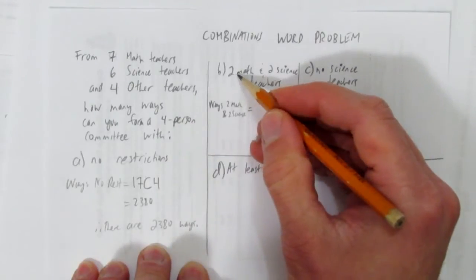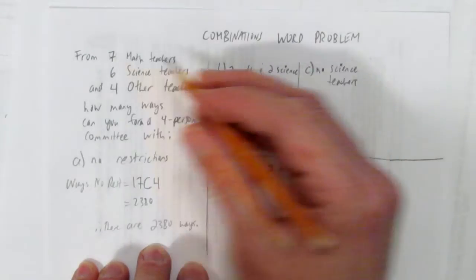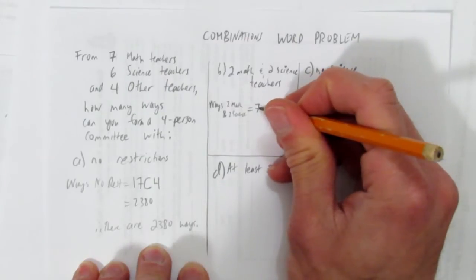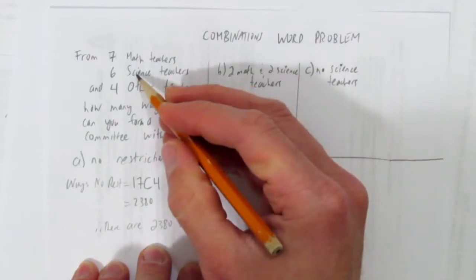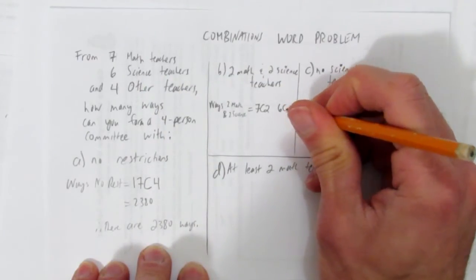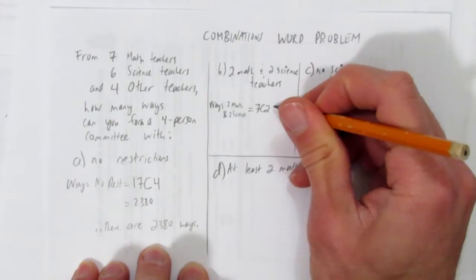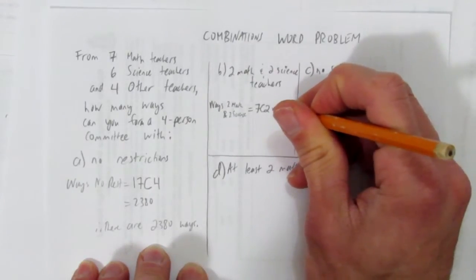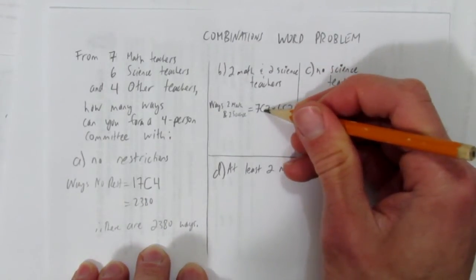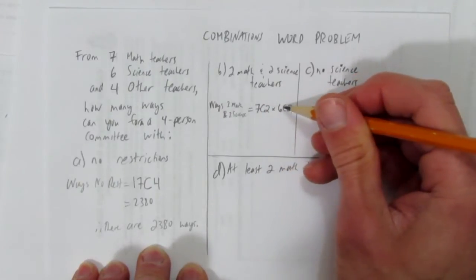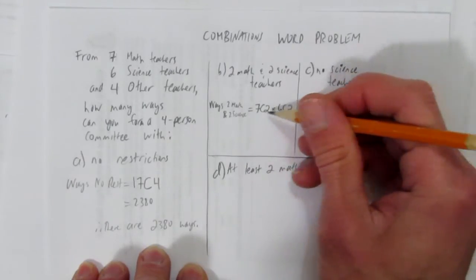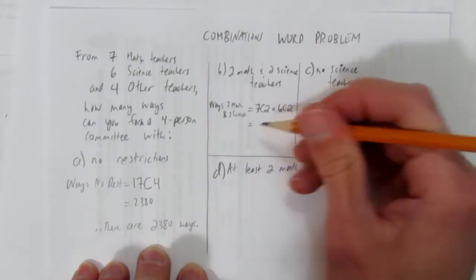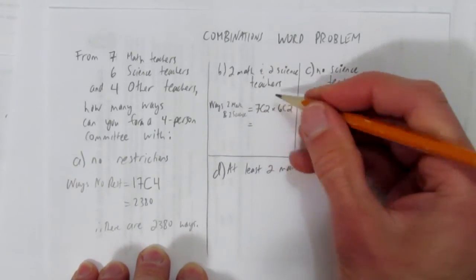We have to choose two exactly from the math teachers. Of the seven math teachers, choose two of them. Same thing for the science teachers. Of the six science teachers, choose two of them. What goes in between here is a multiplication symbol, because for each of these choices, each of these possible combinations, you multiply by all the science teacher combinations you had. Each one of those combinations multiply by each other, because each of them represents another possibility.